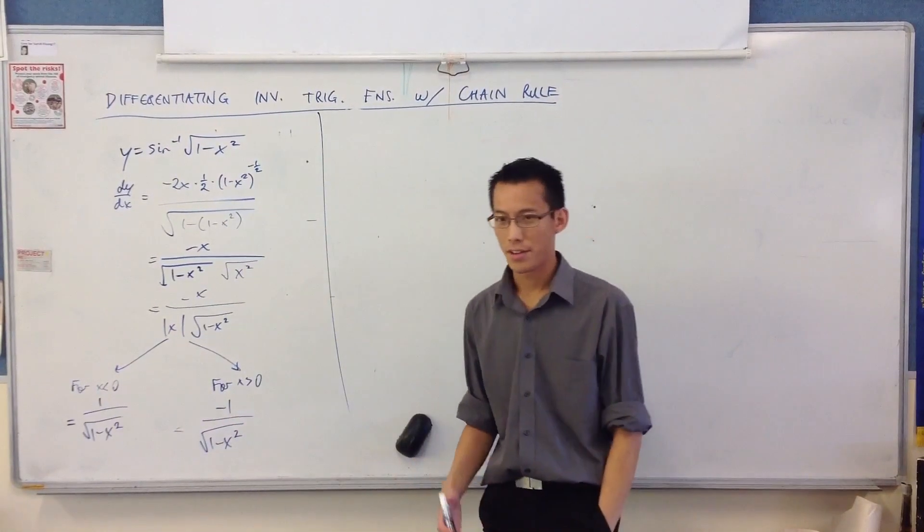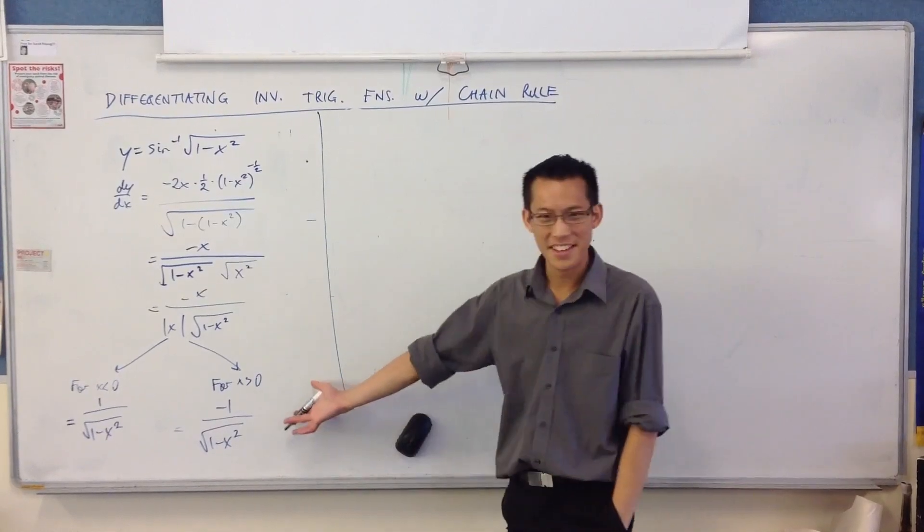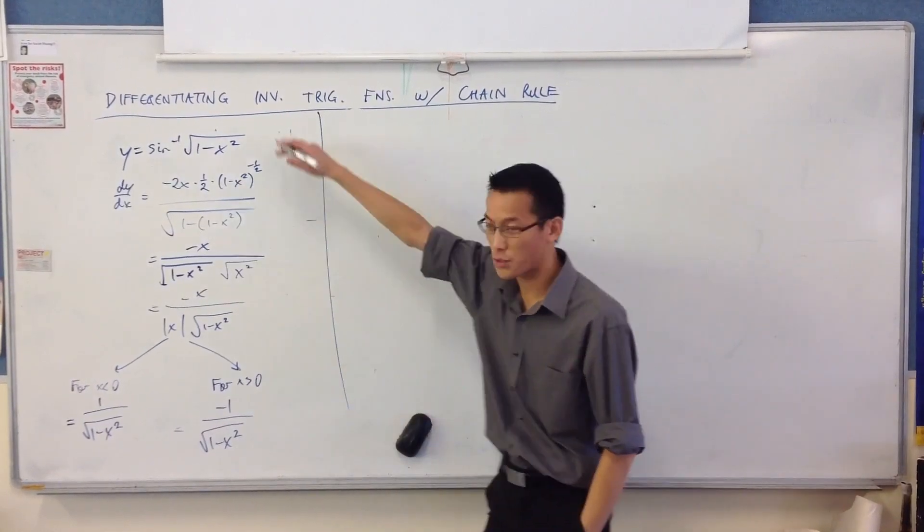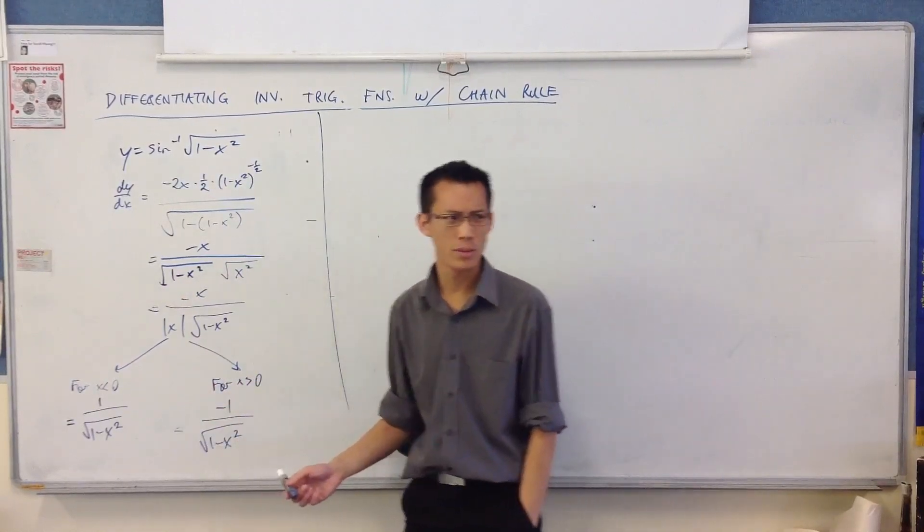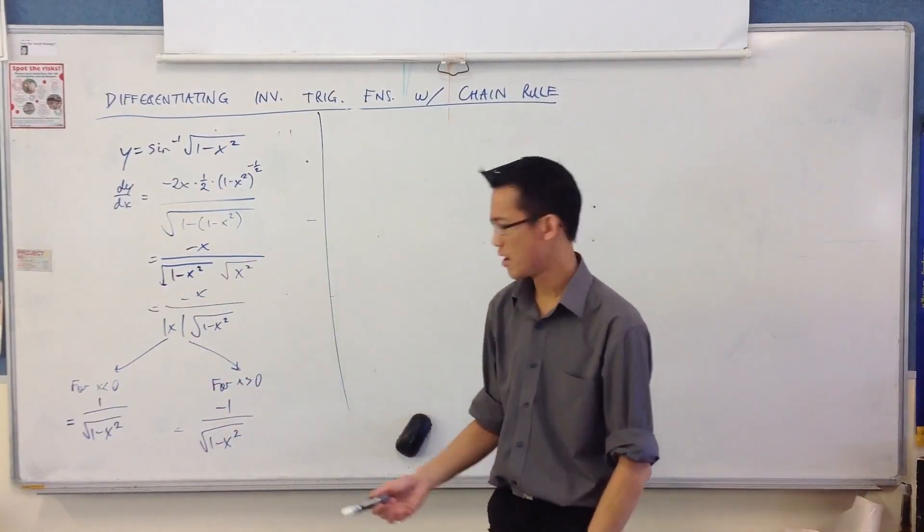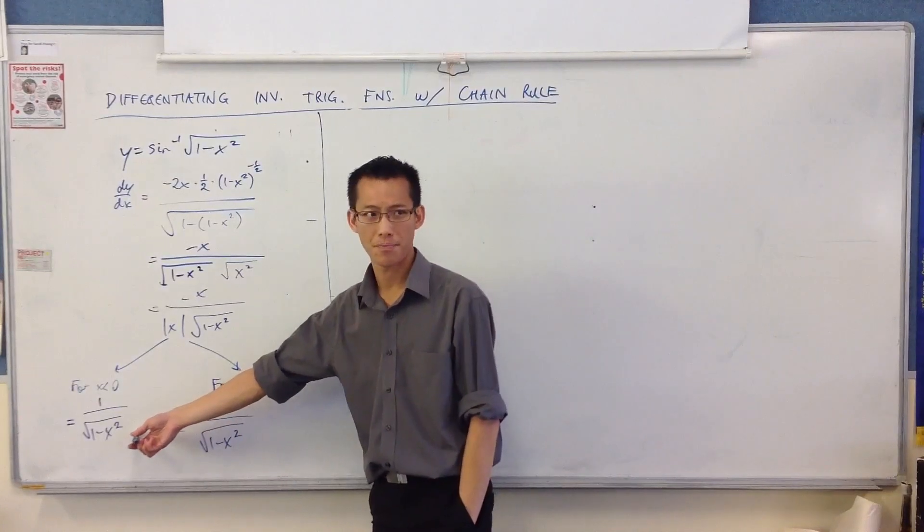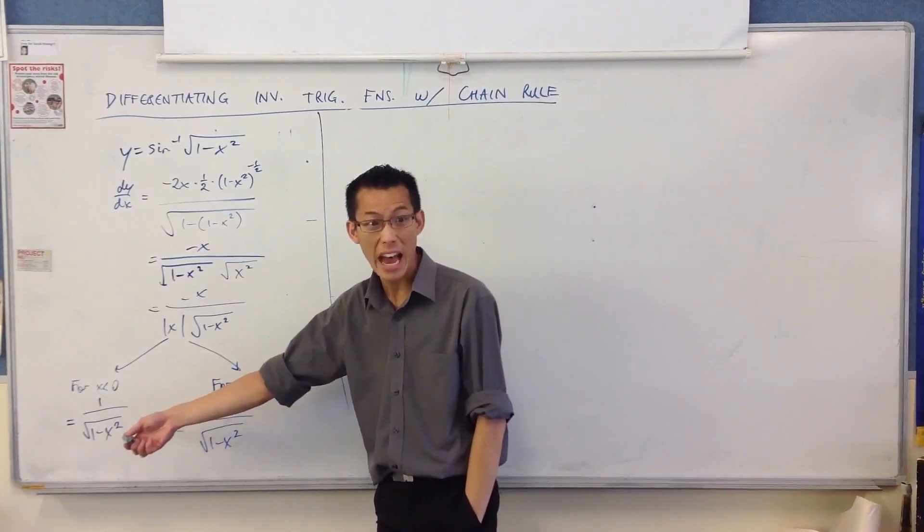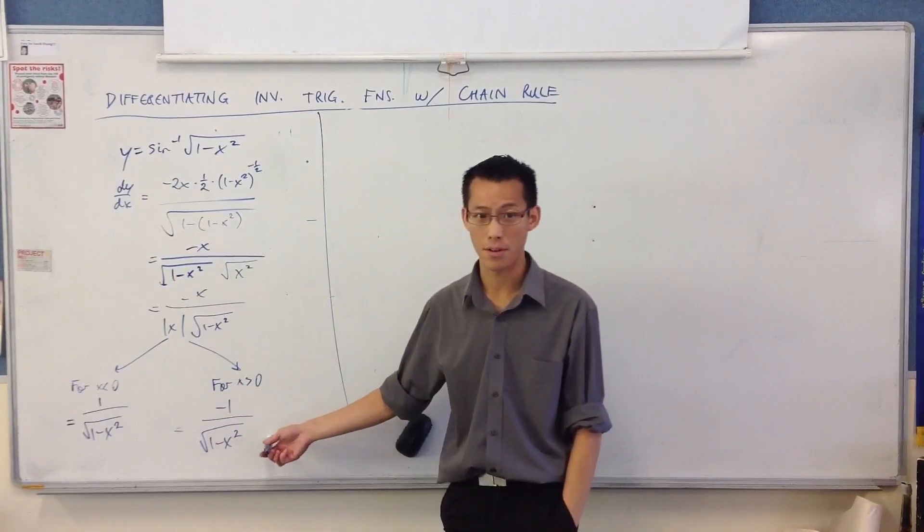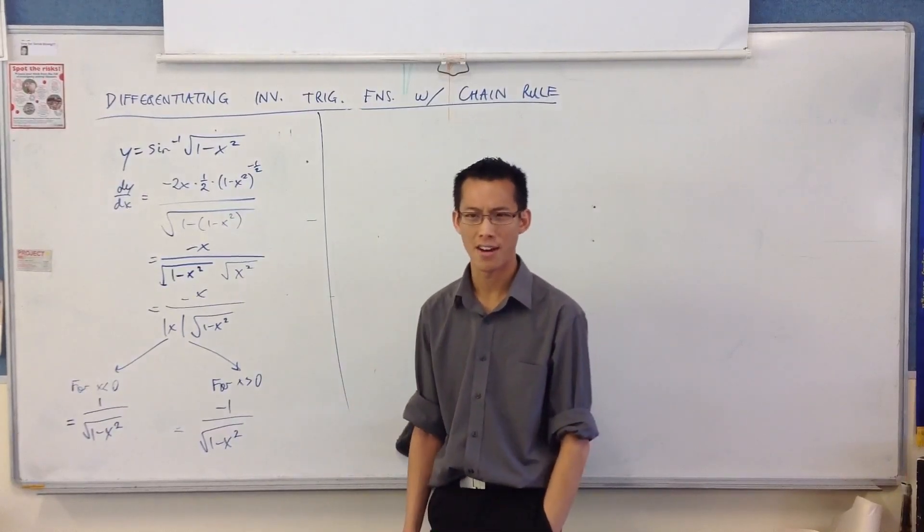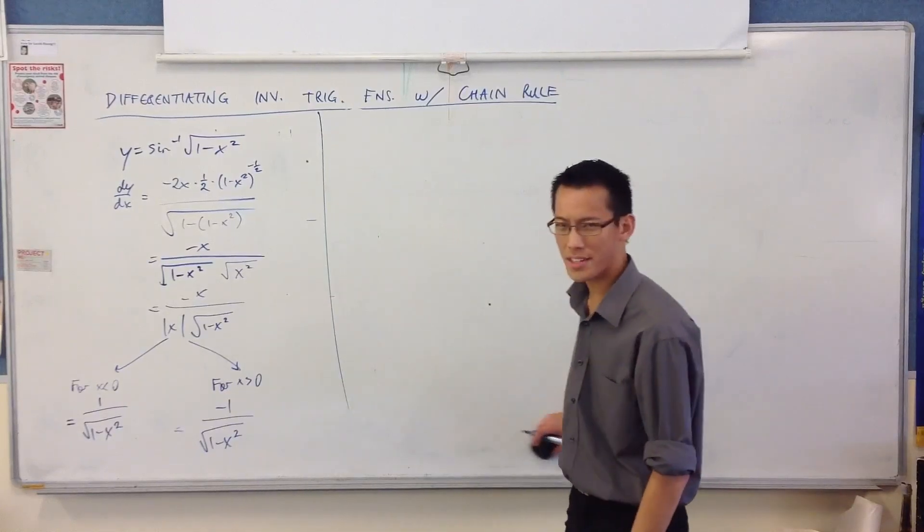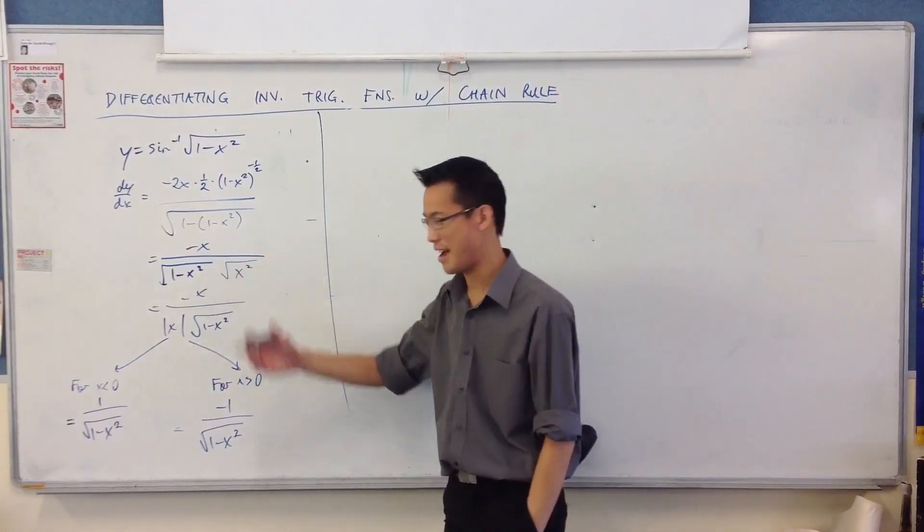Okay, now at this point some bells should be ringing, right? We've just gone through all the effort to differentiate this, and then we landed on these two which we surely recognize, right? What's this the derivative of? This is the derivative of sine inverse. What's this the derivative of? Cos inverse. Huh, okay. Now what does that mean? What is this going to tell us about the graph?